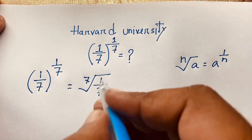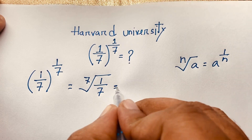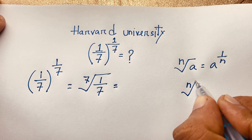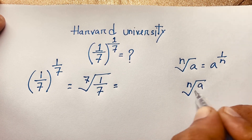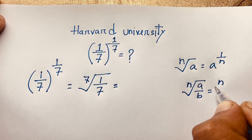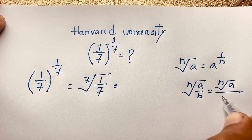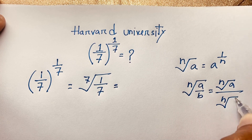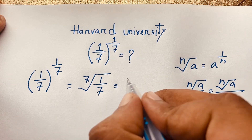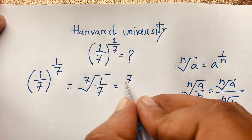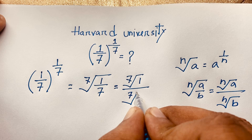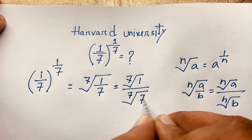Then, you can say this expression here. We know that the n-th root of (a over b) equals n-th root of a over n-th root of b. According to this law, I can say this expression will be 7th root of 1 over 7th root of 7.